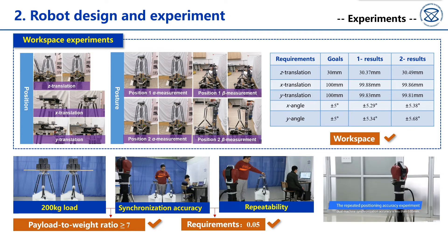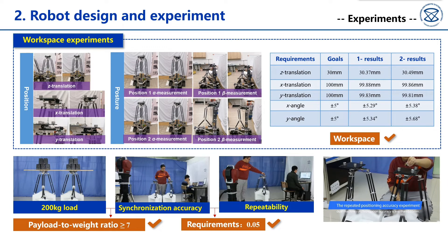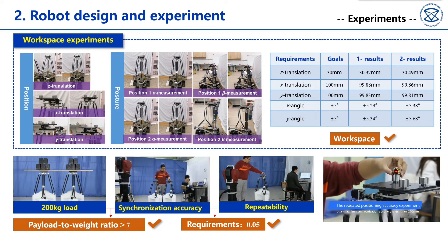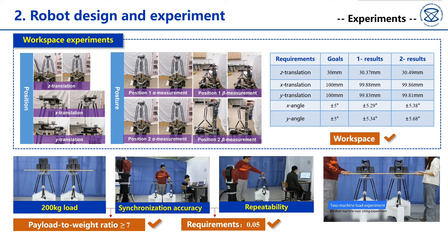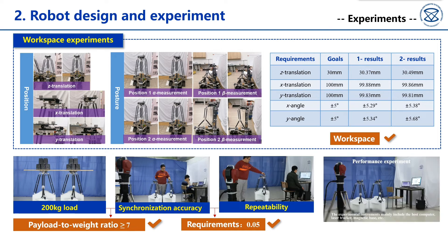Repeatability of single robot is around 0.02 mm, and the demanded value is 0.05 mm. 200 kg loads are exerted on the two robots. The deformations of the end plate are within 0.02 mm, indicating load capacity is acceptable. The synchronous precision is 0.02 mm, also meeting the required performance.